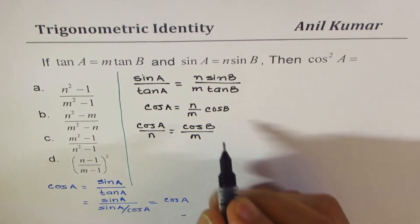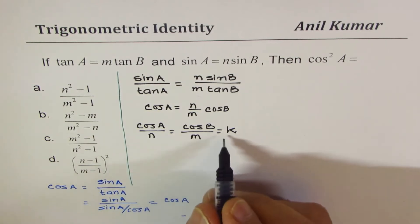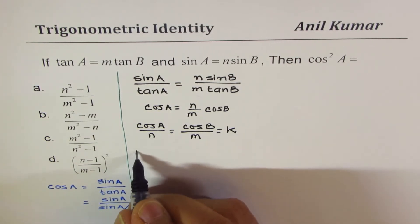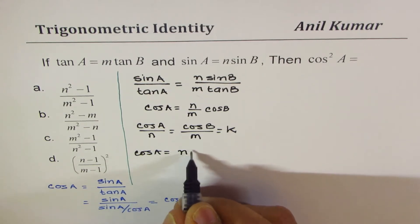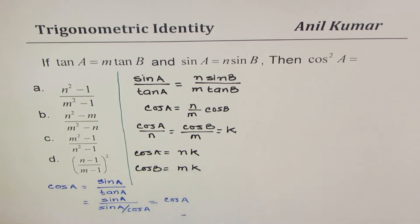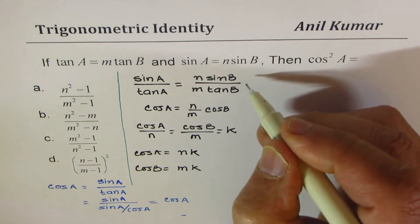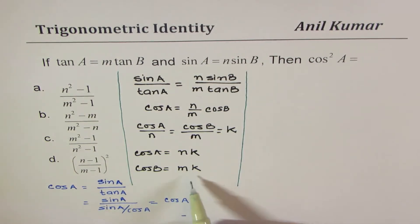Or we could write this as cos A over n is equal to cos B over m. Now, since they are equal, we can say let them be equal to some constant k. So in that case, I could write cos A as n times k and I could write cos B as m times k. So now I do have relation of cosine A and B in terms of n and m. That's the first step.